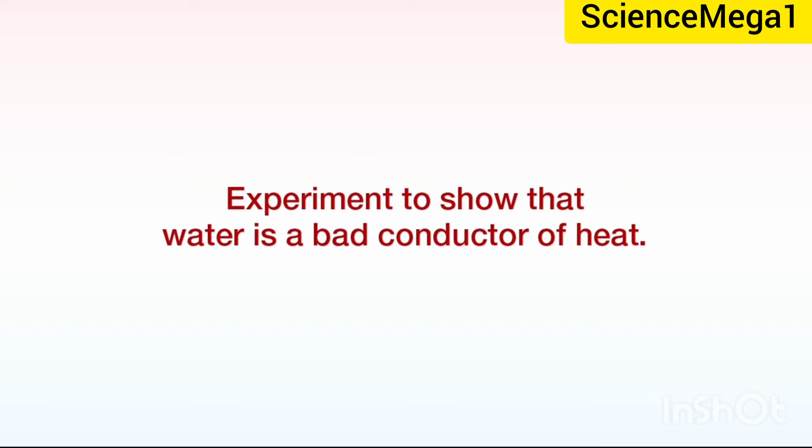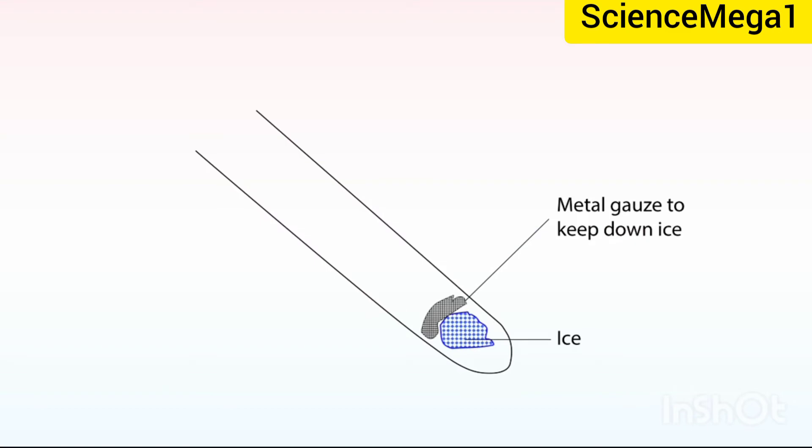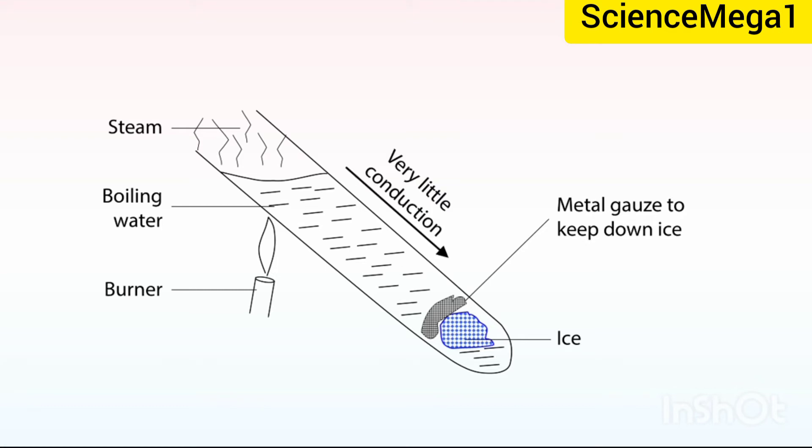Experiment to show that water is a bad conductor of heat is the next item we are moving on to. A piece of ice is wrapped in a wire gauze and placed at the bottom of a test tube. The test tube is filled with water to about three quarters full. The water at the top is heated. While the water at the top is boiling, the ice at the bottom remains unmelted. The hot water at the top is less dense and remains at the top. It cannot move to the bottom of the test tube. This means heat from the upper part of the test tube is not conducted to the bottom of the test tube as shown on your screen. This shows that water is a bad conductor of heat, since it could not conduct the heat from the upper part to the lower end of the test tube.